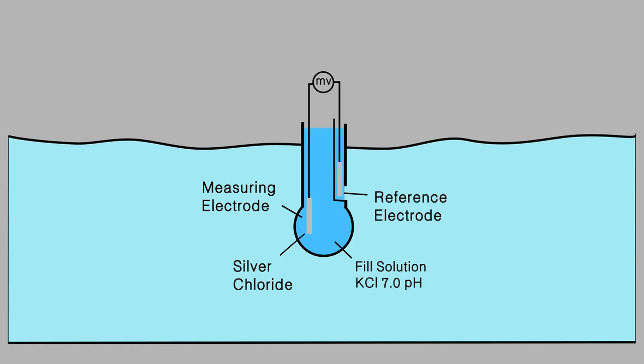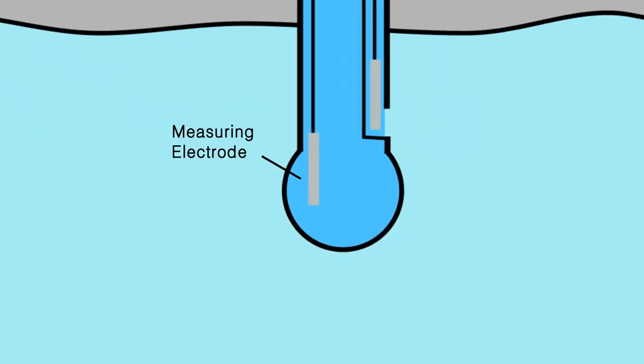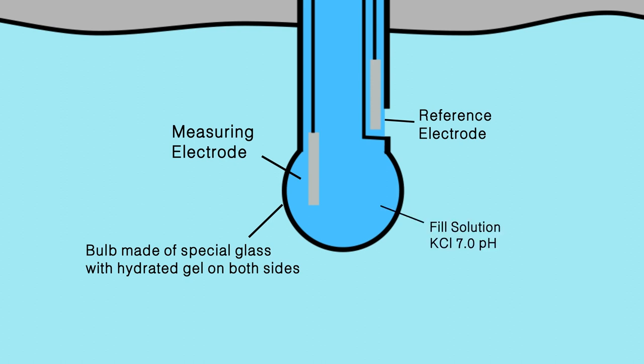A probe consists of a measuring electrode, which is usually a thin glass membrane bulb containing a silver alloy electrical wire submerged in a neutral solution of potassium chloride, and a reference electrode which also has a silver alloy wire submerged in neutral potassium chloride solution.